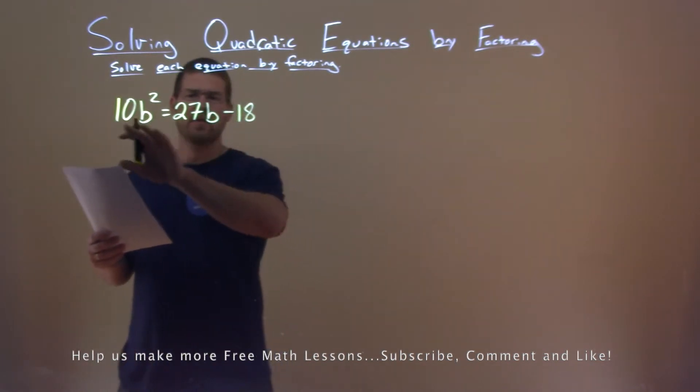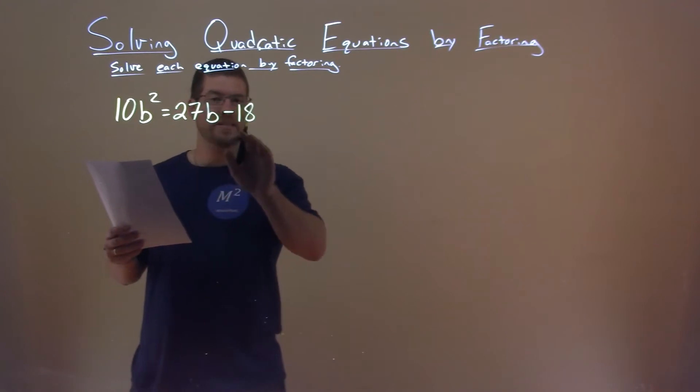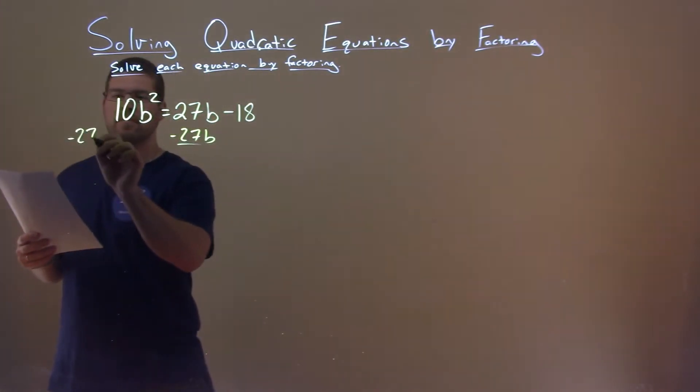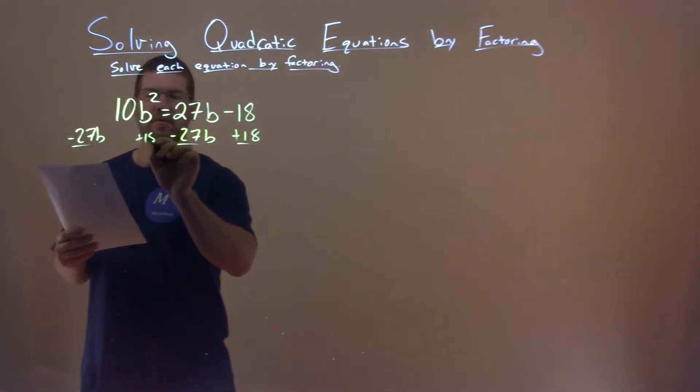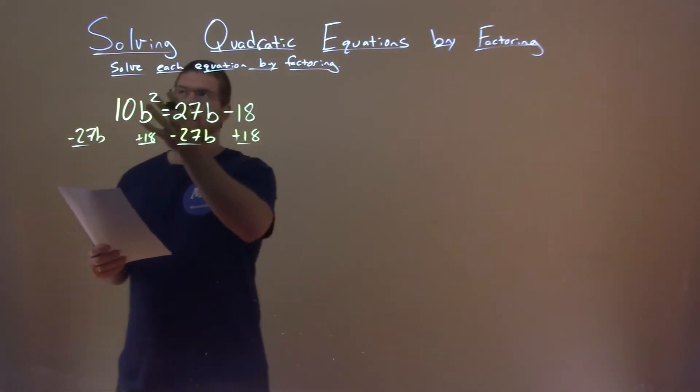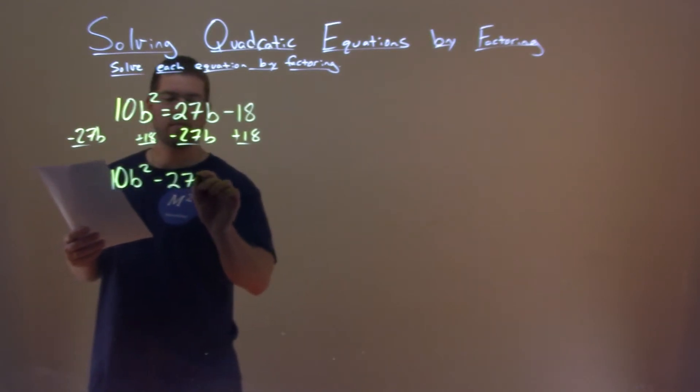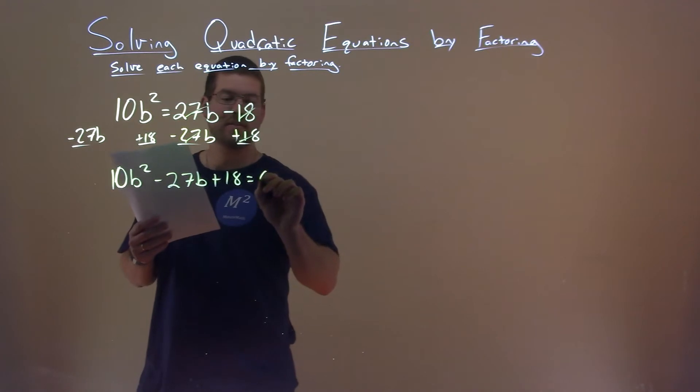First thing I'm going to do is bring both of these over to the left-hand side. We're going to subtract the 27b to both sides and add an 18 to both sides. So we're left with 10b squared minus 27b plus 18, and all of these canceled, so that's equal to zero.